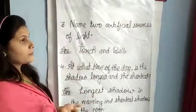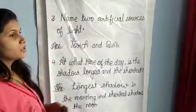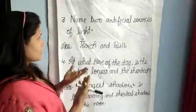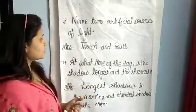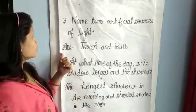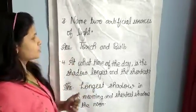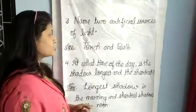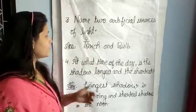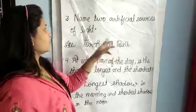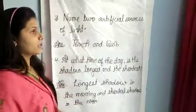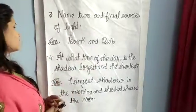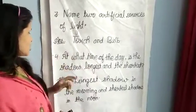The sun is our natural source of light, and the artificial light is called man-made source of light, which includes torch and bulb, or tube light. The light can also be shown next time.